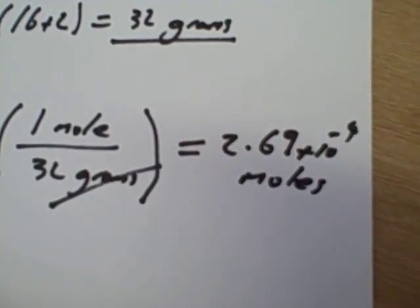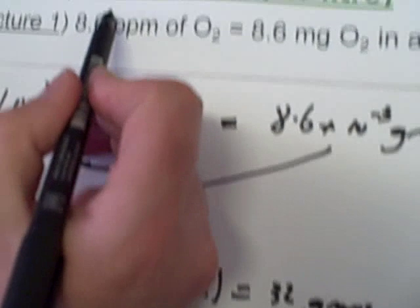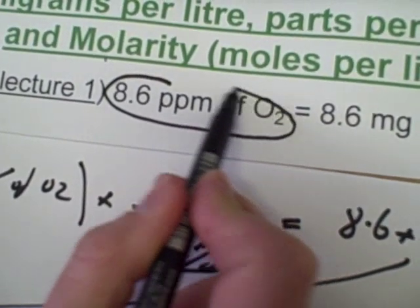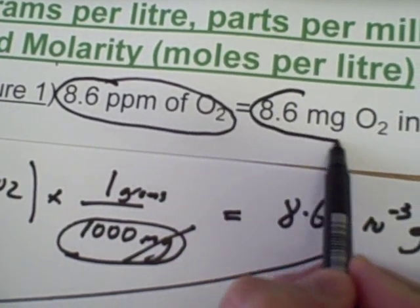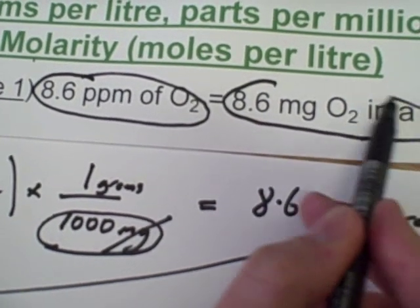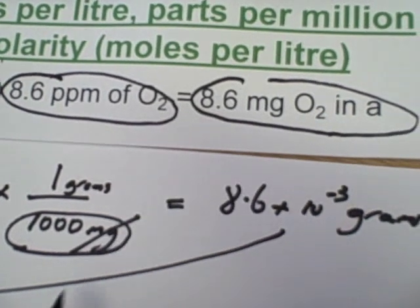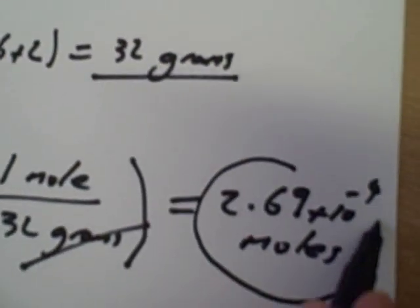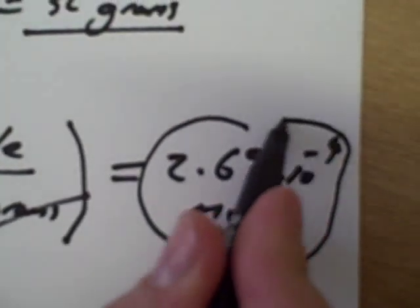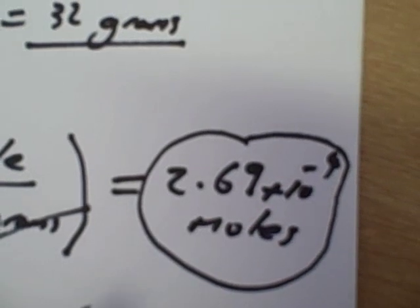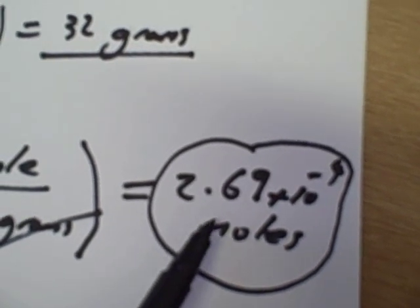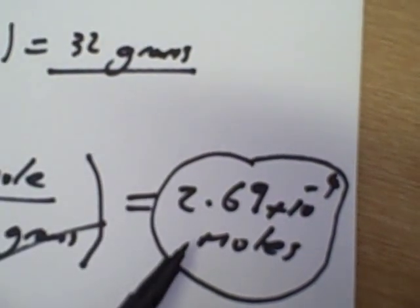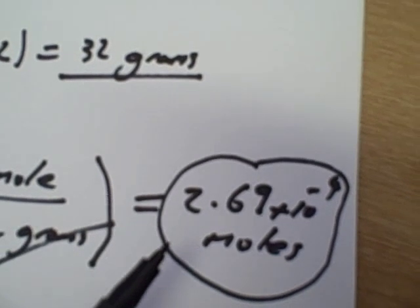What this means is that 8.6 parts per million of oxygen is the same as 8.6 milligrams of oxygen in a litre, which is the same as 2.69 times 10 to the minus 4 moles. This number is significantly different from the other two, but it means the same thing.